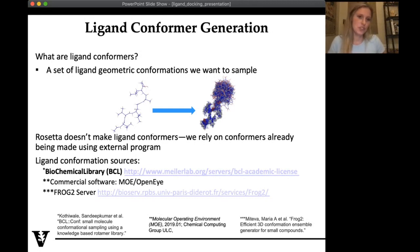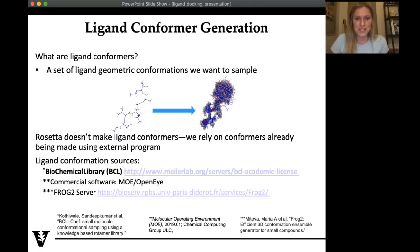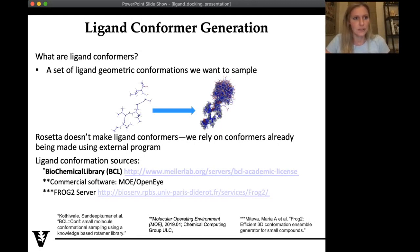Ligand conformer generation: I mentioned that you have to sample extensively both the ligand and the protein. The ligand side comes from ligand conformers — simply a set of different geometric conformations that we want to sample. Rosetta does not do conformer generation; instead we rely on other software programs to make these conformers. Containing an SDF file of all those individual conformers, we can make them Rosetta compatible. We typically use the BCL, also made in the Mylar lab, but MOE, OpenEye, and the Sprout2 server are other options.